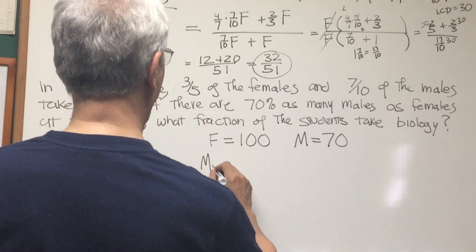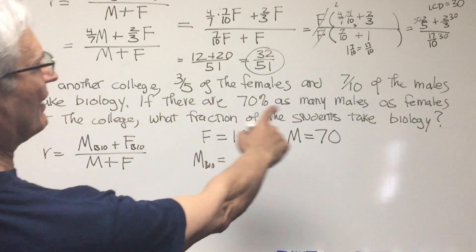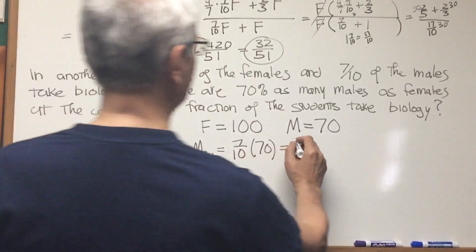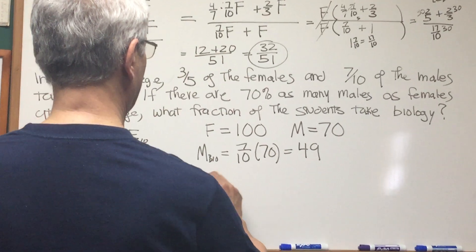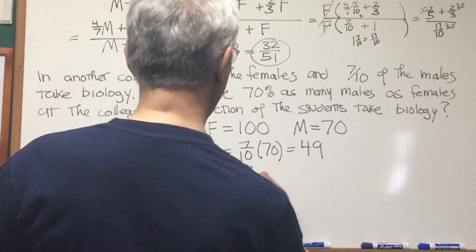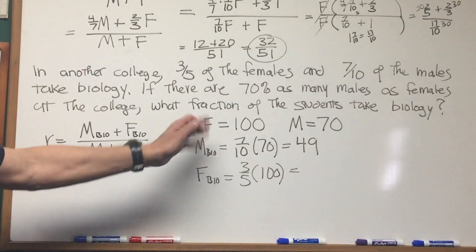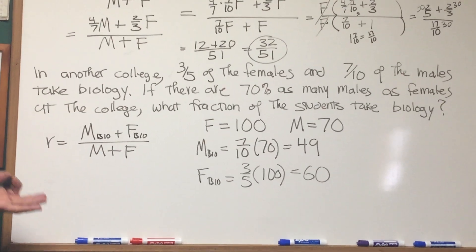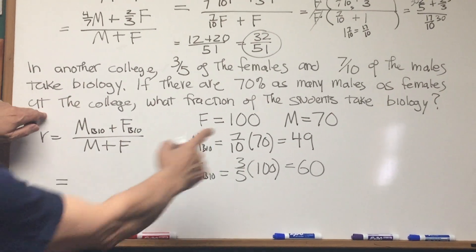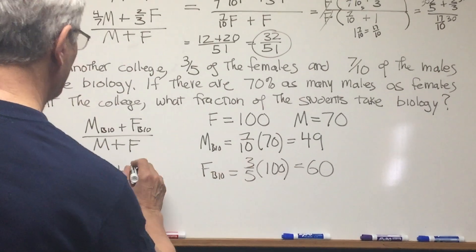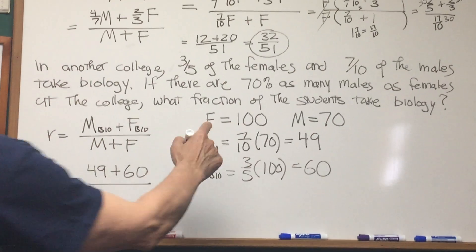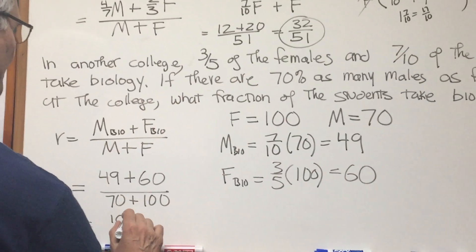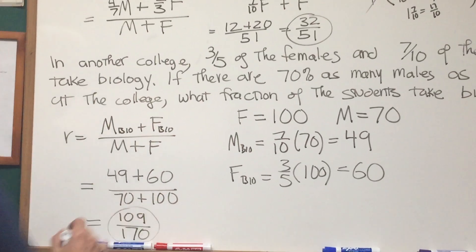I know that the number of males taking bio is equal to seven-tenths of the males, seven-tenths of seventy, which is equal to forty-nine. And the number of females taking bio is equal to three-fifths of the females. Since there are a hundred females, that means three-fifths of one hundred, which is equal to sixty. Our problem is pretty much solved. The number of males taking bio is forty-nine. The number of females taking bio is sixty. And the sum of males plus females is seventy plus a hundred. So the answer that we're looking for is one hundred nine over one hundred seventy. There's our ratio.